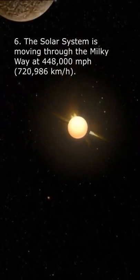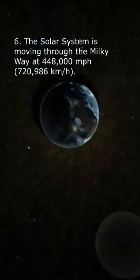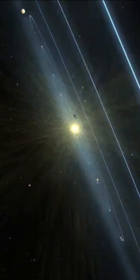Our solar system is moving through the Milky Way at a speed of 448,000 miles per hour.